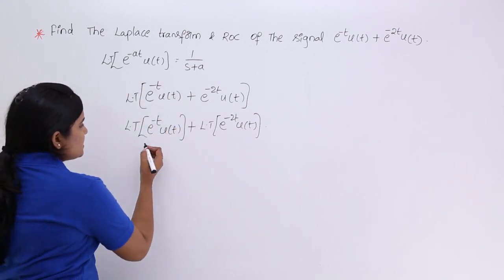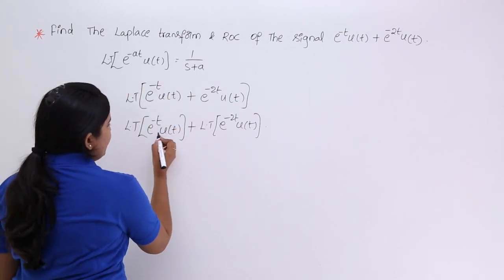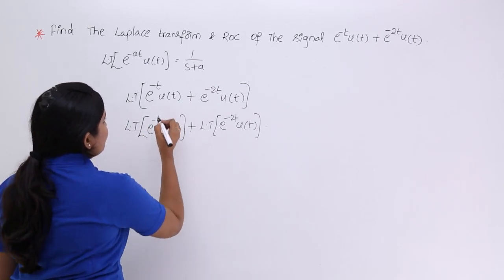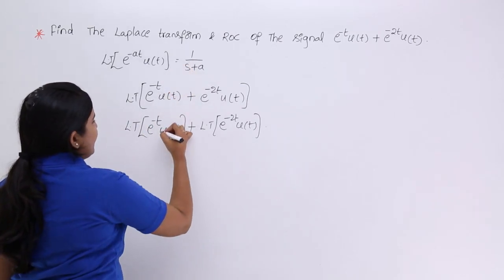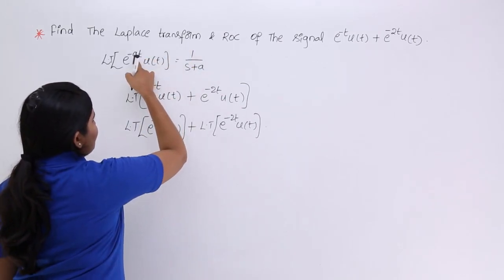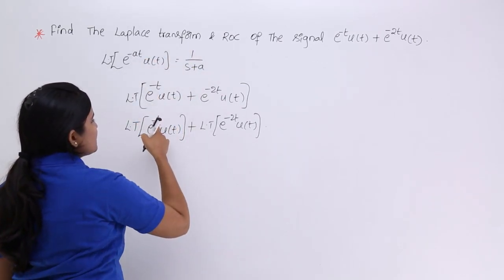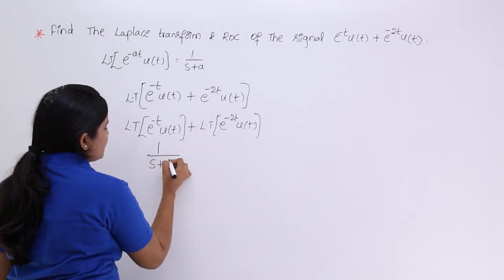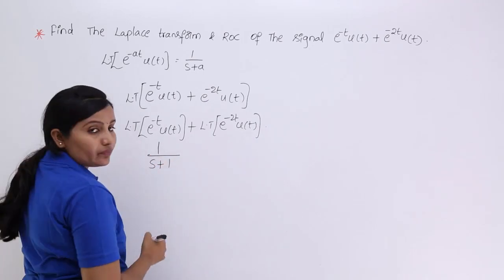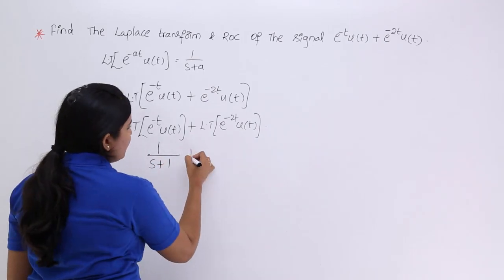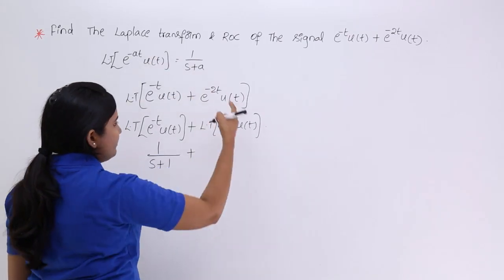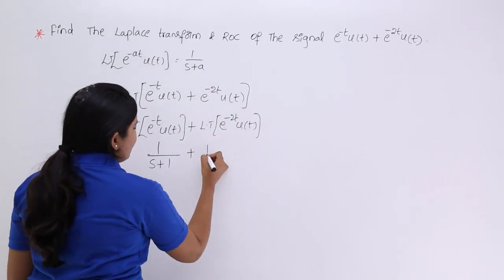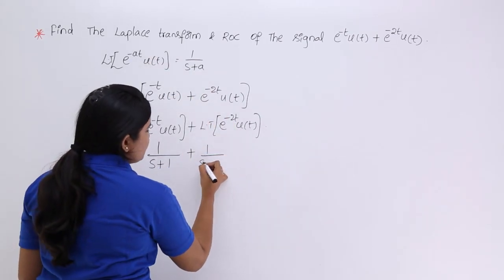Comparing with the standard formula, for e power minus t u of t, the value of a is 1, so the transform is 1 by s plus 1. Similarly, for e power minus 2t u of t, comparing with the same equation, the transform is 1 by s plus 2.